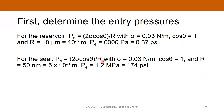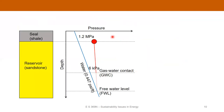Now for the seal, we go through the same exercise. The only difference is that R here is 50 nanometers, which is 5 times 10 to the minus 8 meters. When we work through the math, we get an entry pressure of 1.2 megapascals, equal to 174 psi. So those are our pressure boundaries at the seal and at the gas water contact. The pressure difference right at the seal is 1.2 megapascals, and at the gas water contact it's 6 kilopascals. So what depth interval do we need to get the capillary pressure to decrease by that amount?